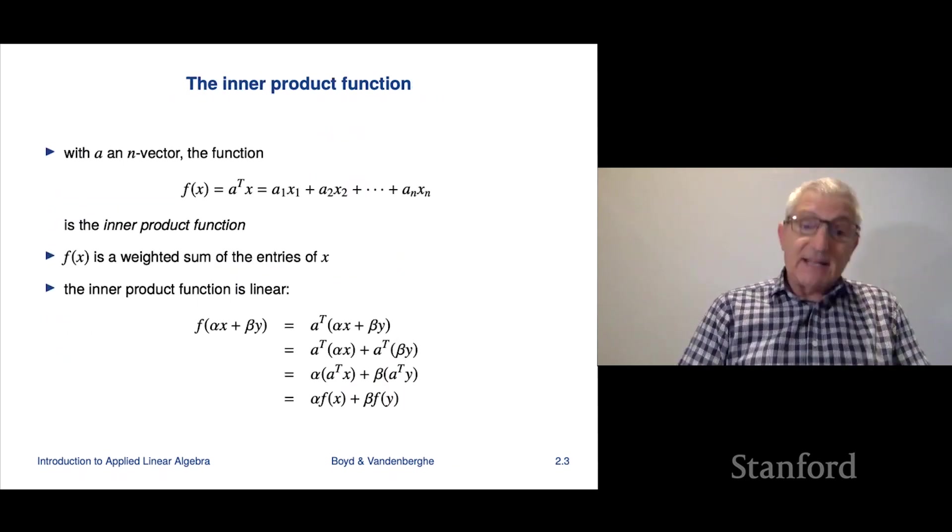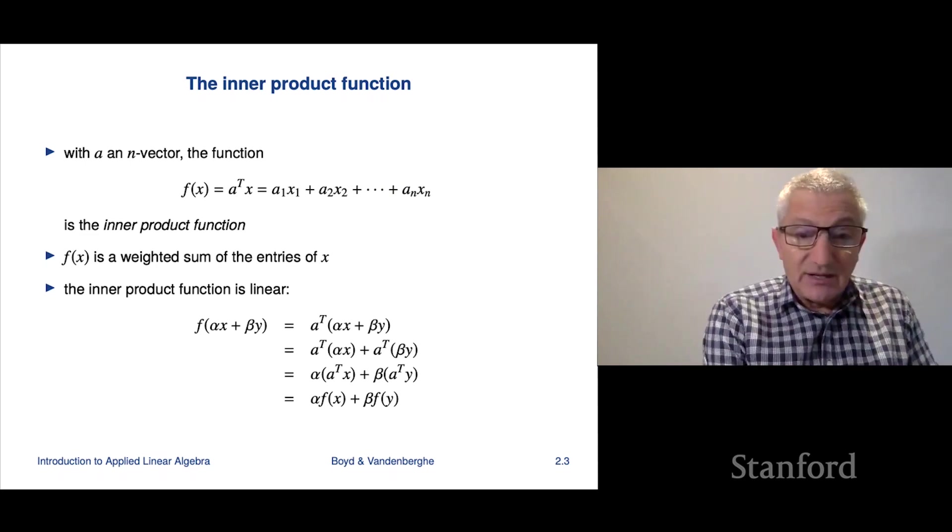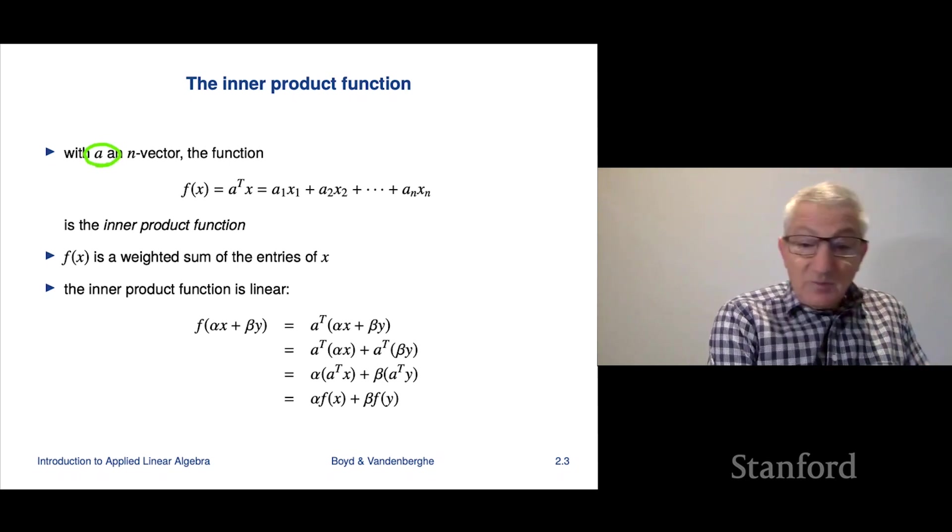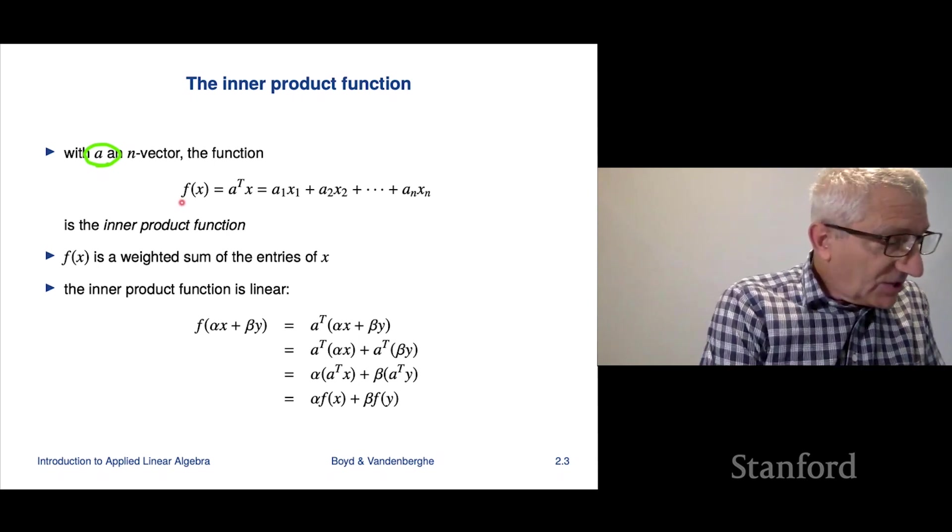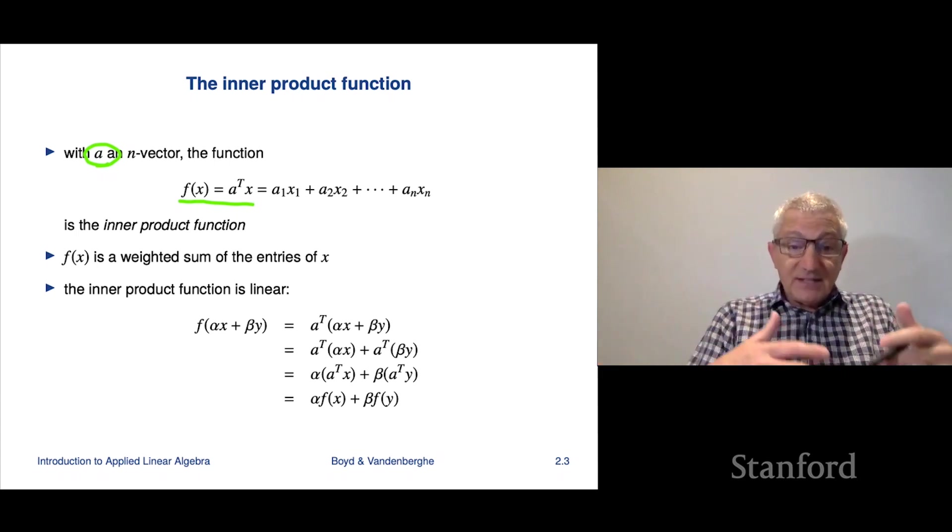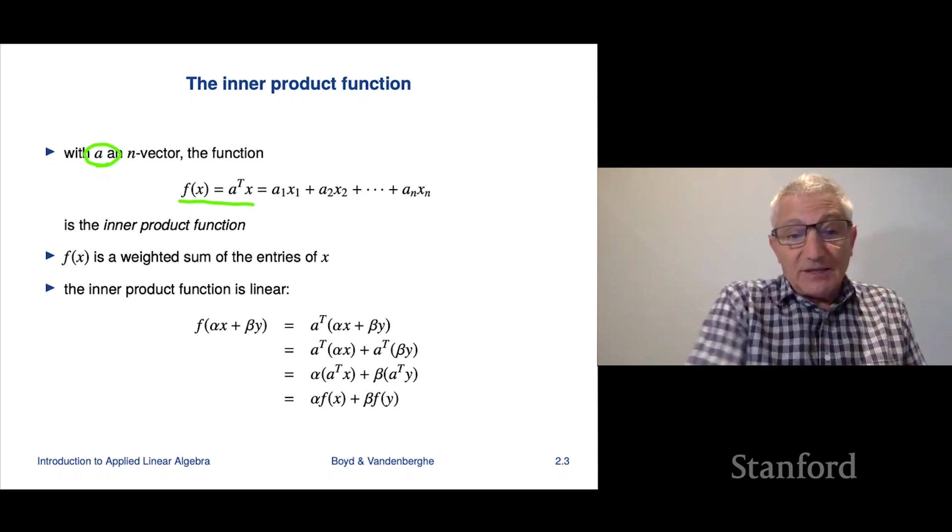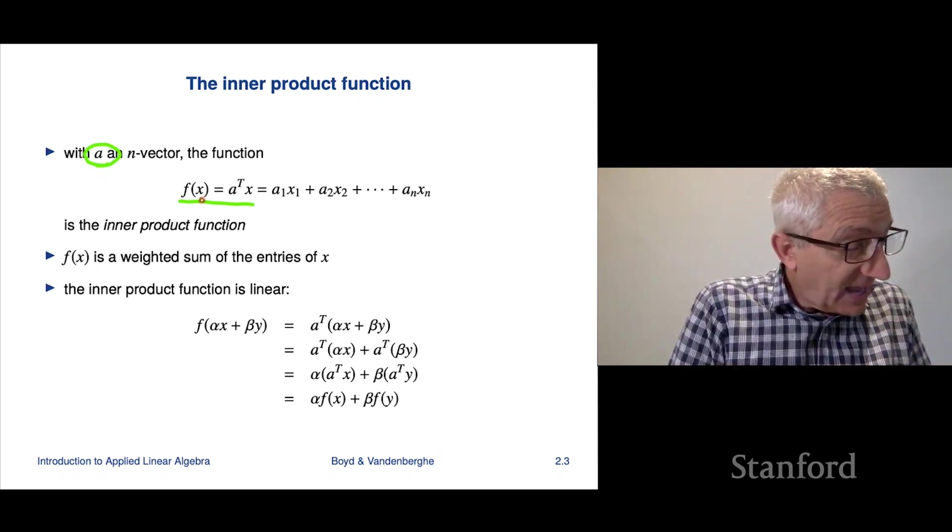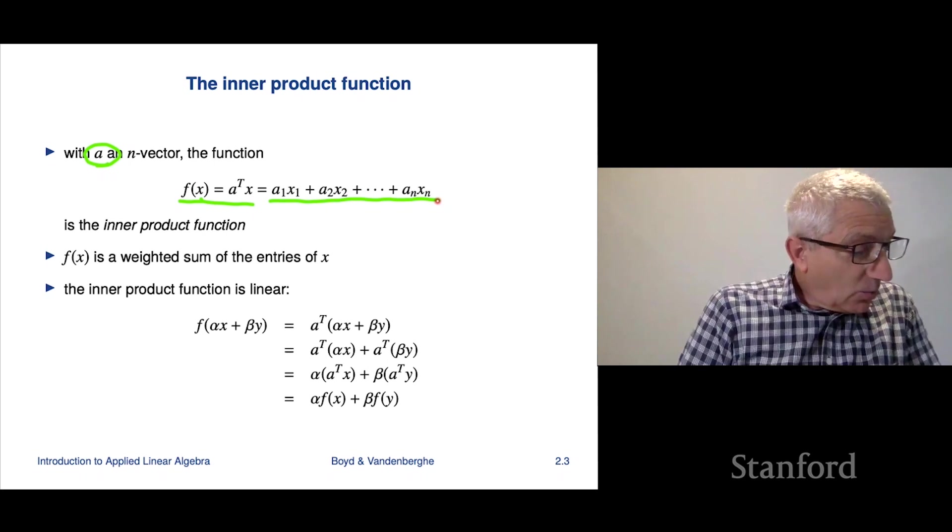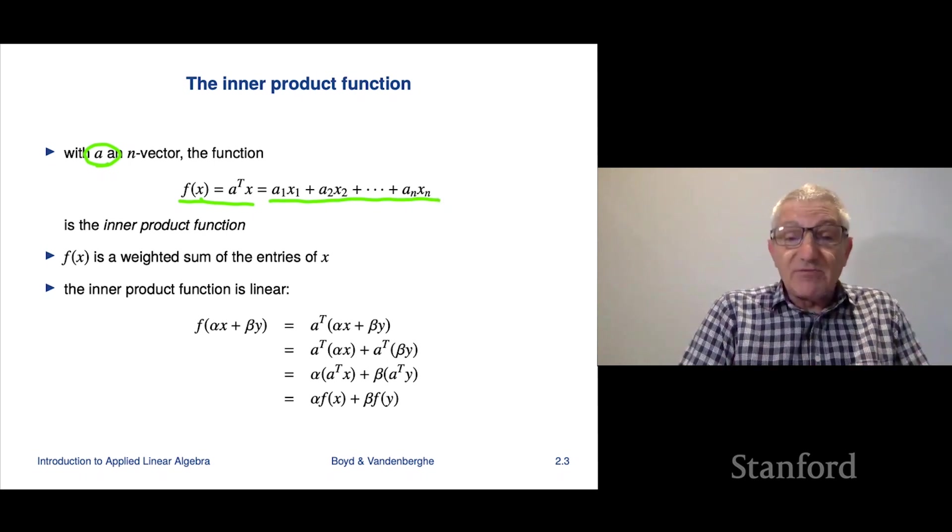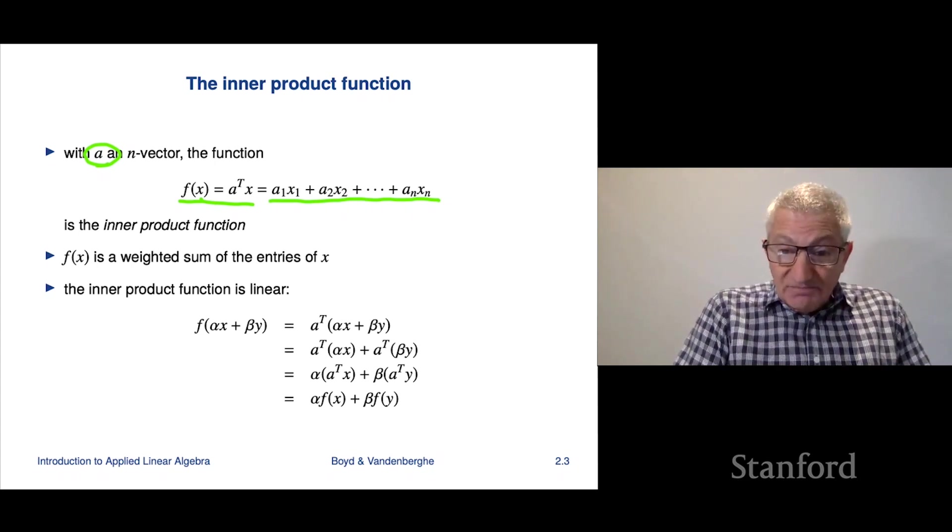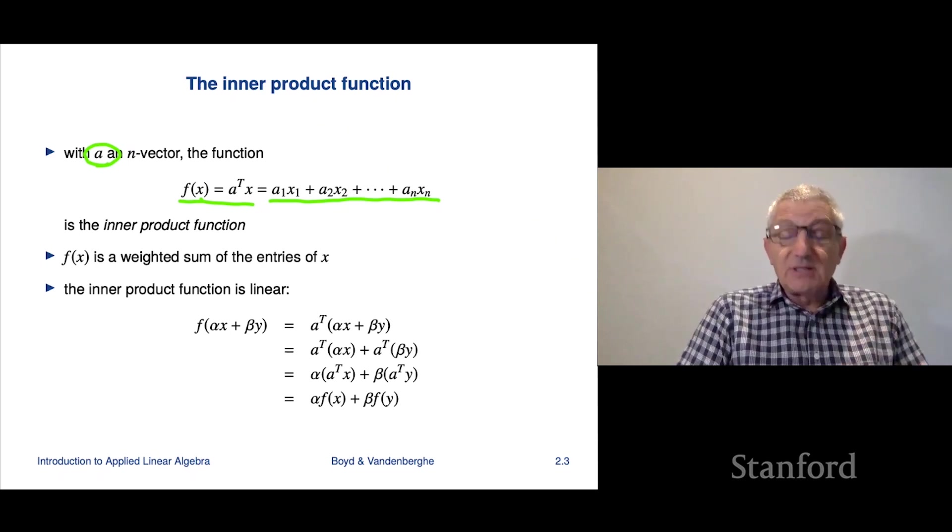So here's an example of a function that's linear, and it is the inner product function. Let's be very careful about this. We'll start with an n vector a, just a vector. But you have to specify it. And then I'm going to form a function f of x. And by the way, how do I explain what my function is? I have to explain what does f give for an arbitrary argument. And so here's what I'm going to say. I'm going to say that when you give me x, f is going to calculate the inner product of a and x. And that just means f is going to calculate a weighted sum of the entries of x.